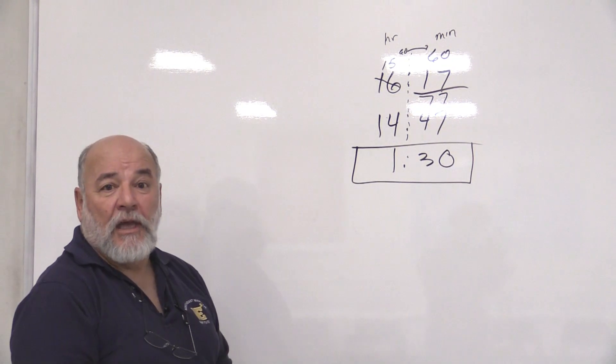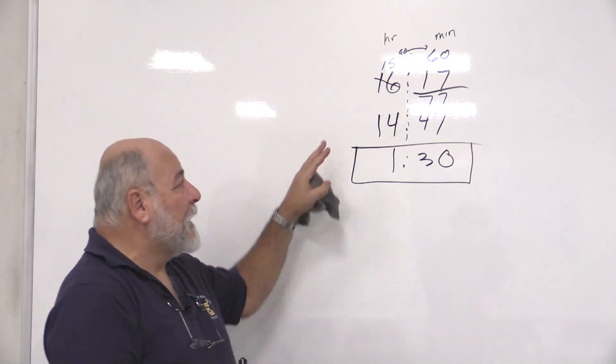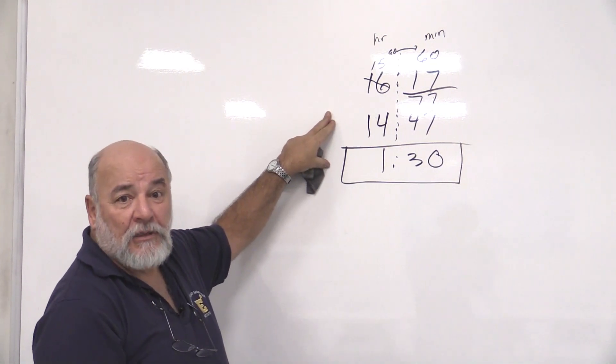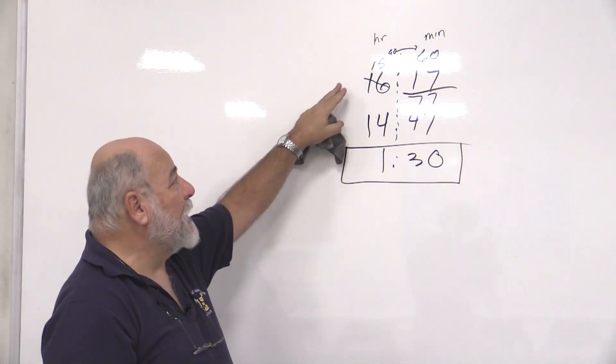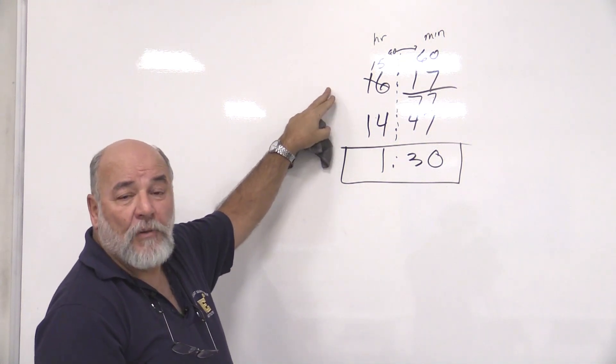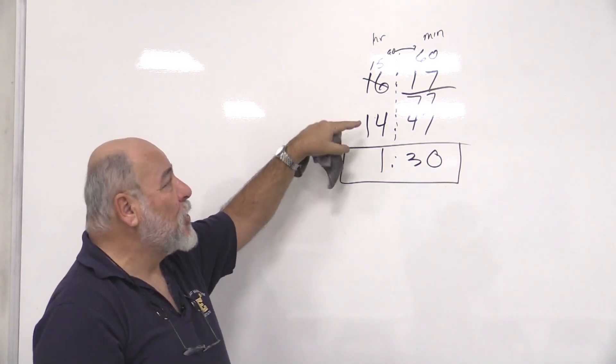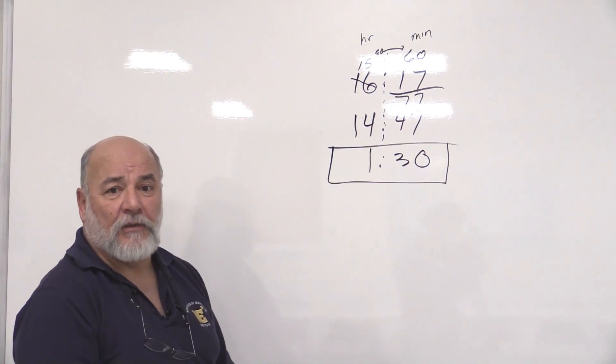That's how to deal with hours and minutes and borrowing, and making sure that we understand you can't do it on the calculator because the calculator doesn't understand our math. And we need to borrow when we borrow, we're borrowing an hour, 60 minutes, not tens like we did in regular math.